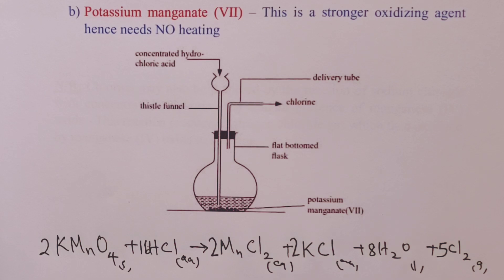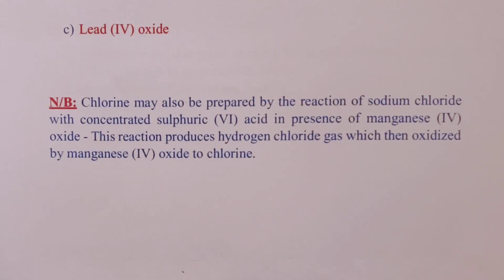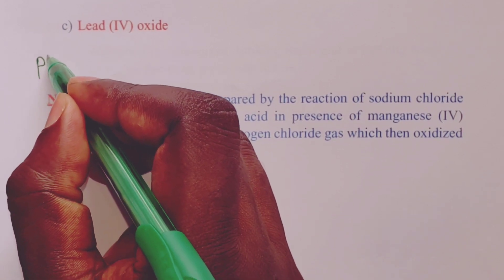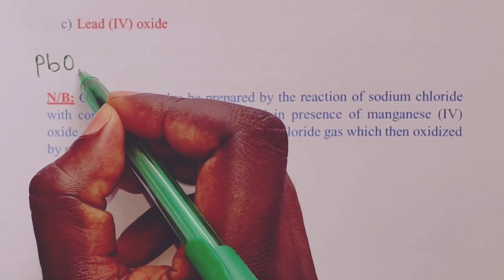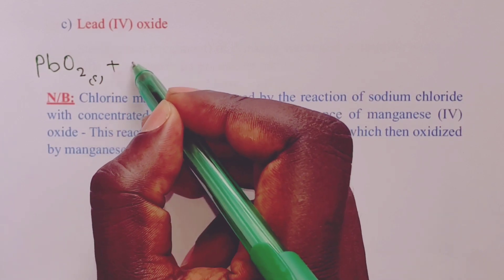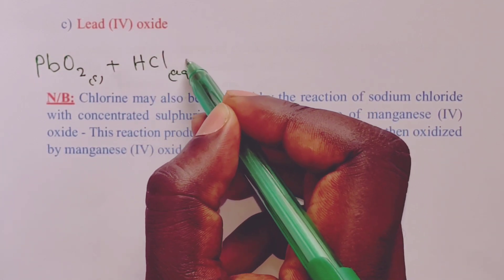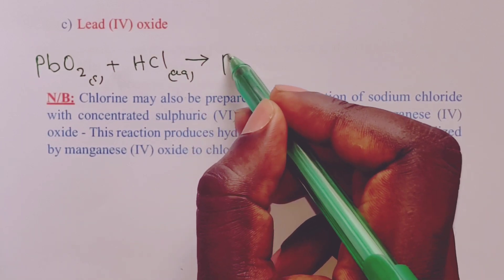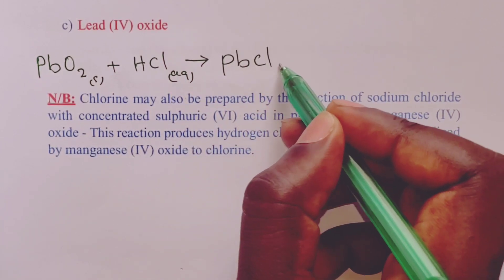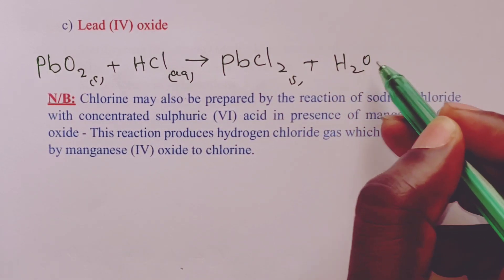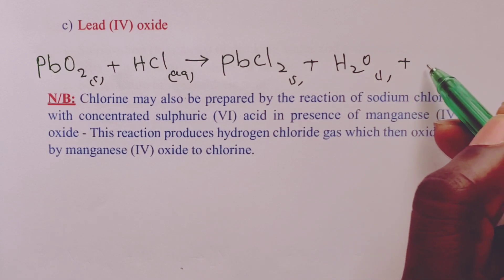Our last oxidizing agent is lead(IV) oxide. For lead(IV) oxide the reaction is as follows: lead(IV) oxide reacts with concentrated hydrochloric acid to produce lead(II) chloride, water, and chlorine gas. The equation balances with a two on water and a four on hydrochloric acid.